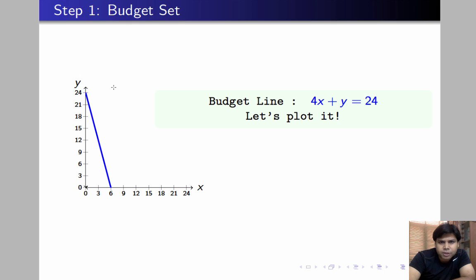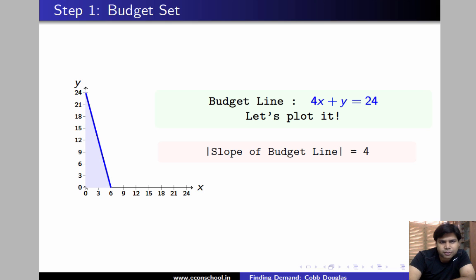Connect them and this is what you're going to get - that's our budget line. What is the slope of the budget line? The slope is simply price of x divided by price of y, and that's 4. What is our budget set? The budget set is all the points that lie below the budget line.